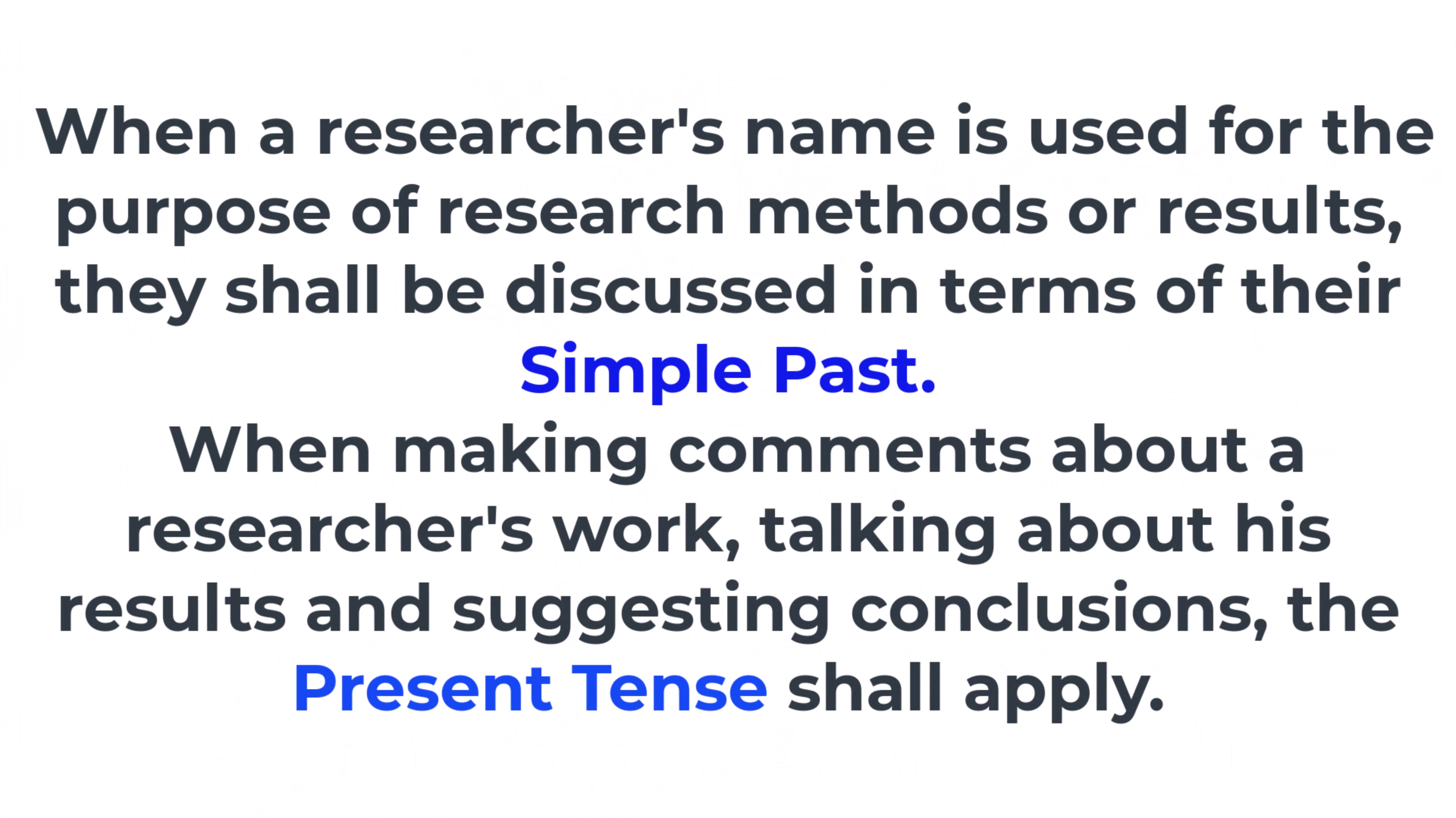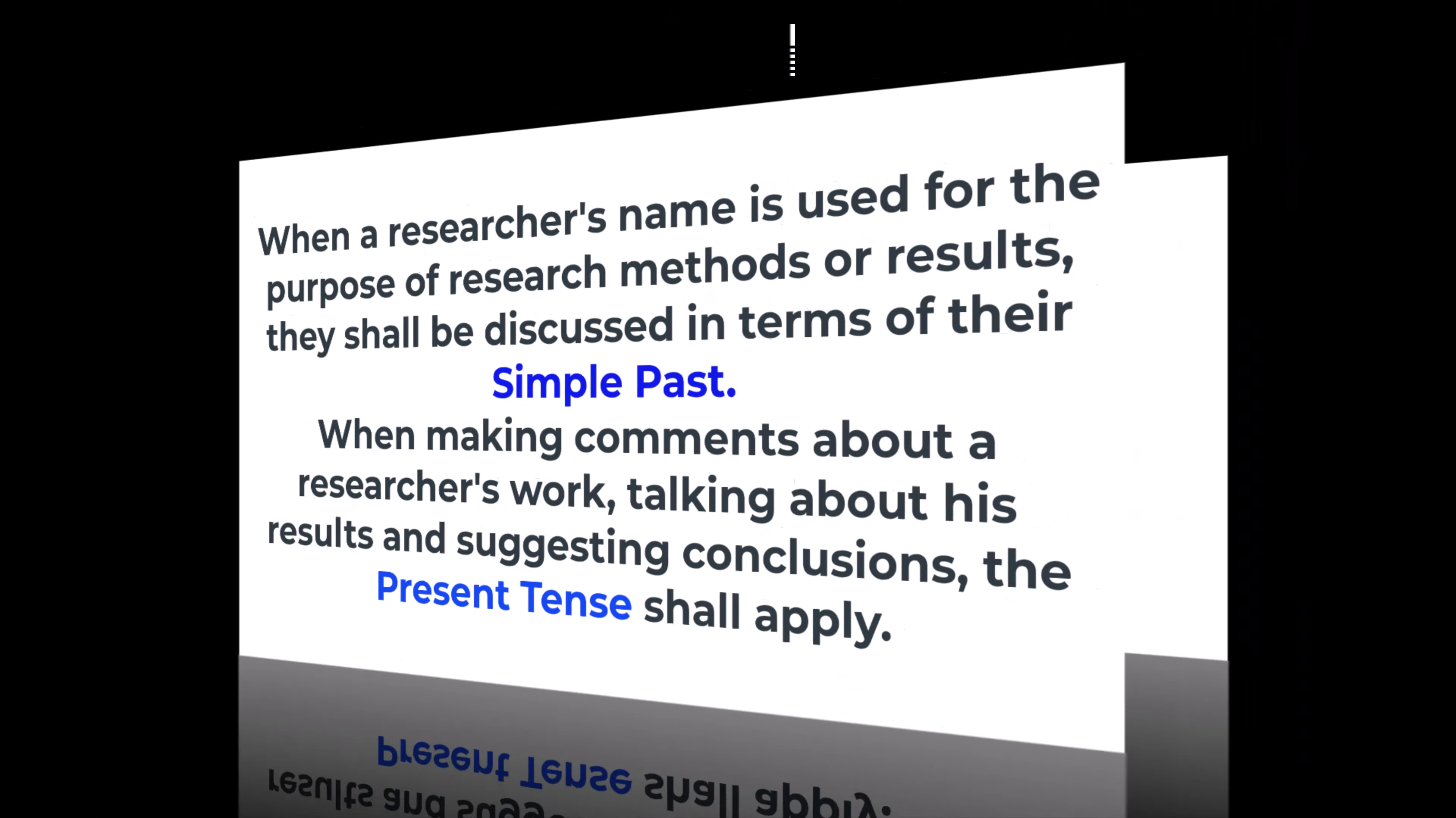Literature review: when writing a literature review, whether for a research paper or as an independent article, it is crucial to know how to use tenses based on the style manual—APA, AMA, MLA, etc. Research methods or results are discussed using the simple past when the researcher's name is used as the subject. Present tense is used when commenting on a researcher's work, discussing their results, and drawing conclusions.